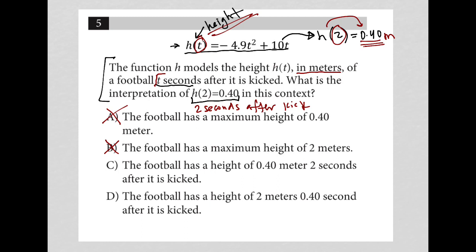Choice C, the football has a height of 0.40 meters 2 seconds after it is kicked. That is exactly what we just said. It is exactly the meaning of replacing the t with a 2, and then saying that this all turns into 0.40 meters.